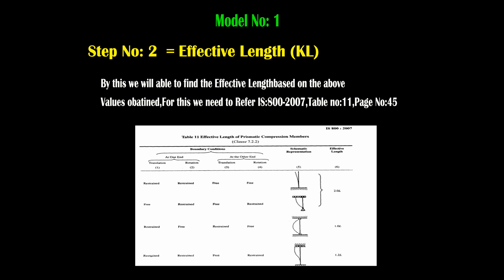In Table 11, on the right-hand side near the picture, you will see values like 2.0L, 1.0L, 1.2L — these are the effective length constants for different boundary conditions such as one end fixed and other end free, one end hinged and other end roller, both ends hinged, etc. On the left-hand side, you will see boundary conditions at one end and the other end in terms of translation and rotation. Based on these boundary conditions, we solve for effective length.